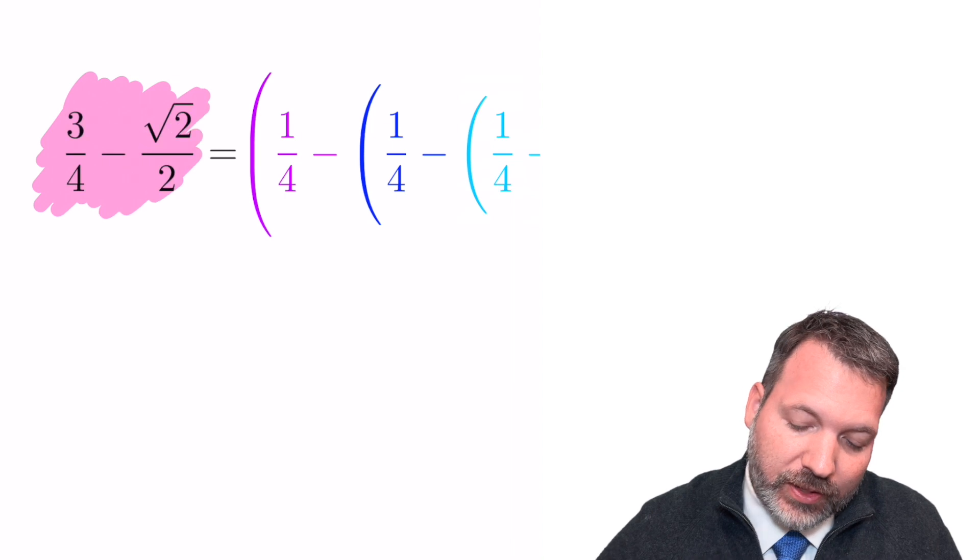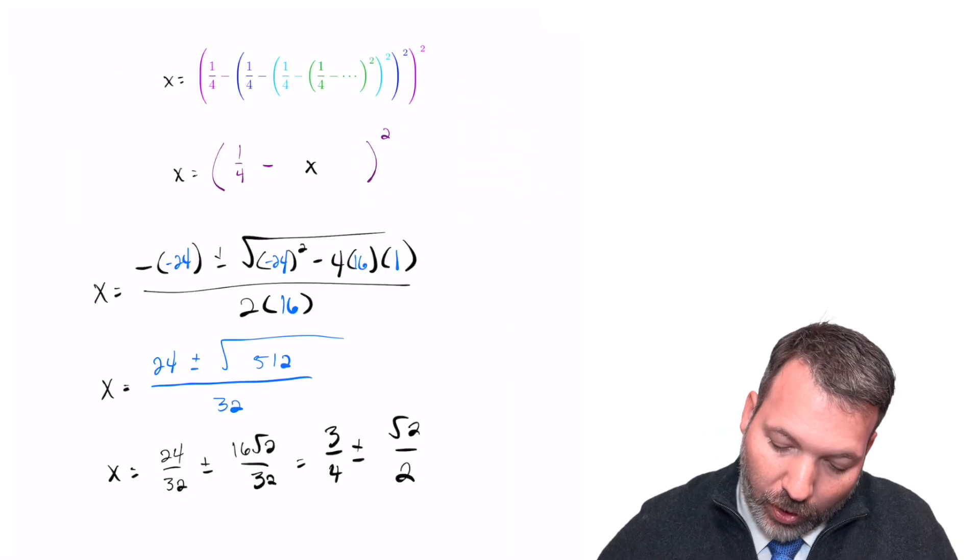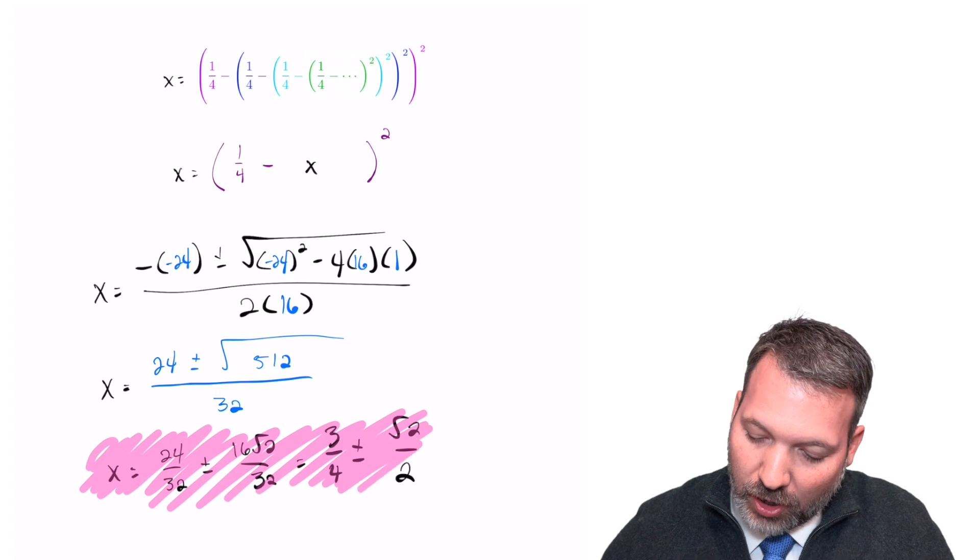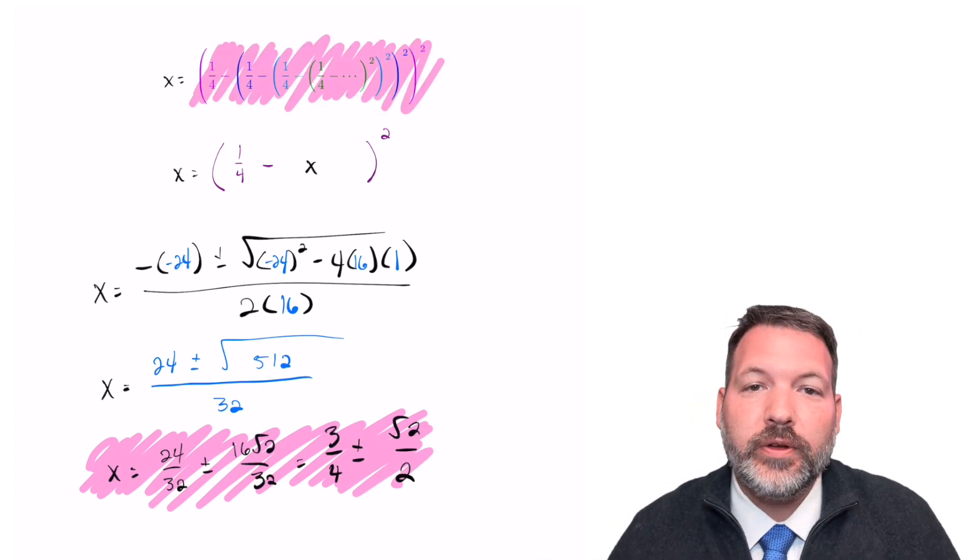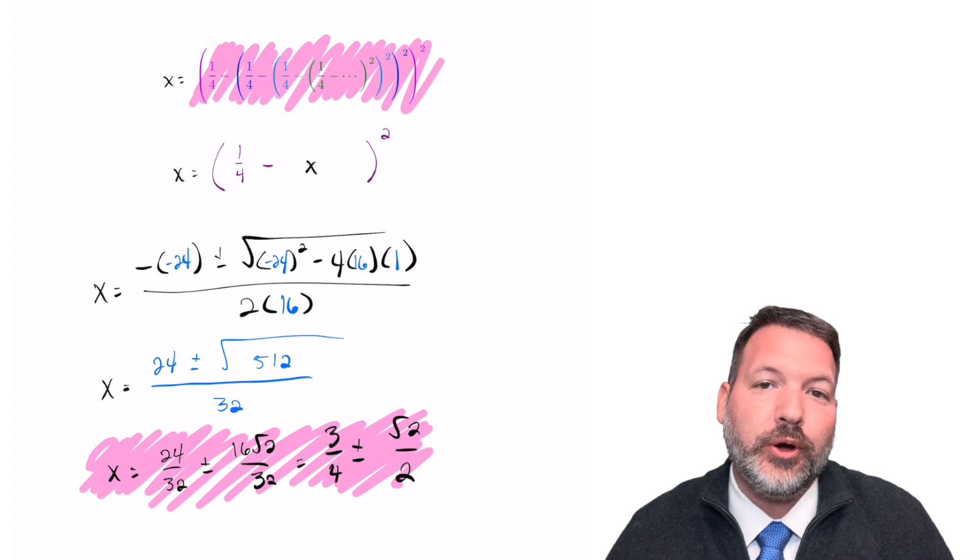We have shown that this crazy-looking series—one-fourth minus one-fourth minus one-fourth, on and on forever, squared, squared, squared—is in fact equal to three-fourths minus the square root of 2 over 2.